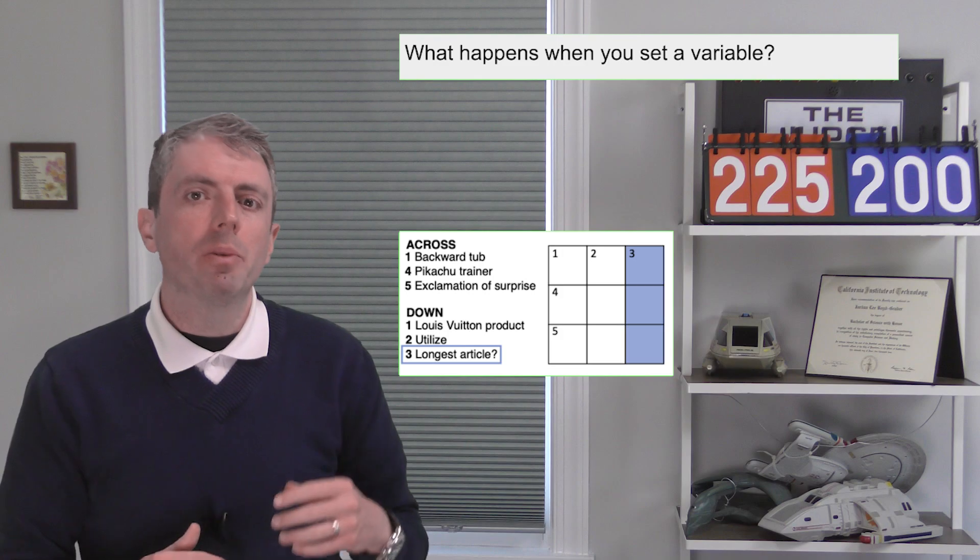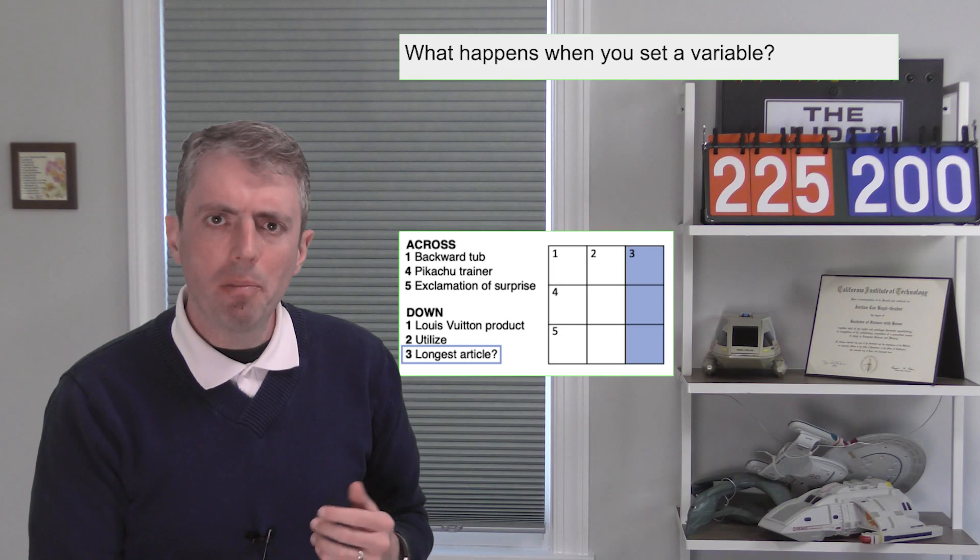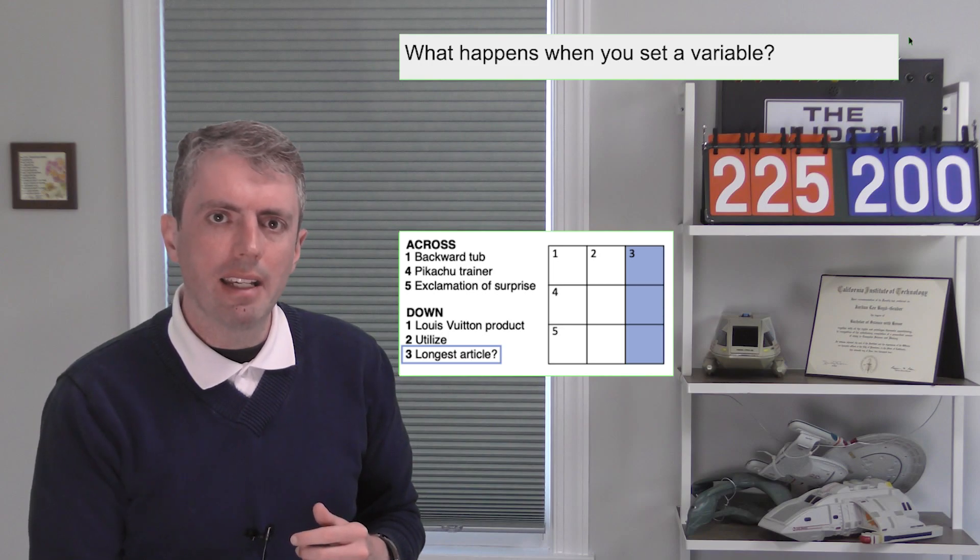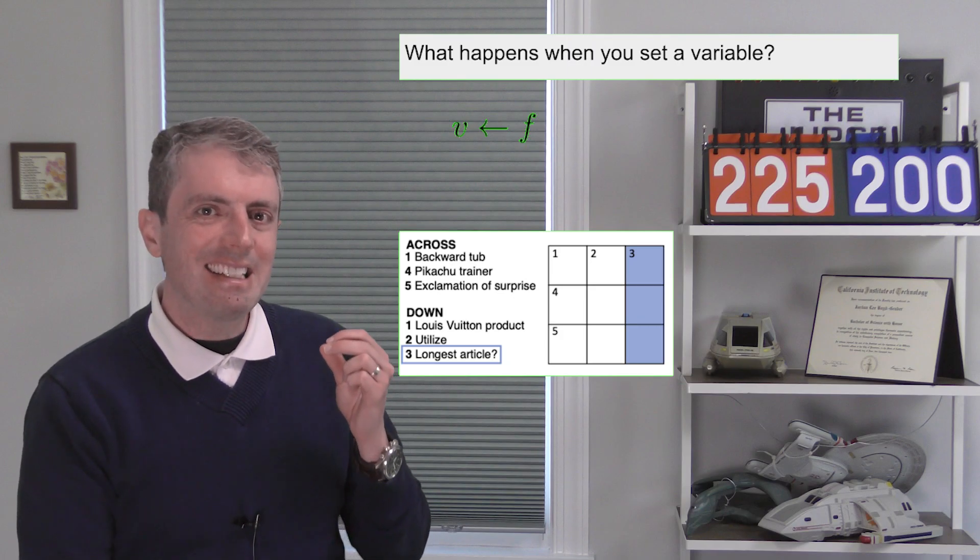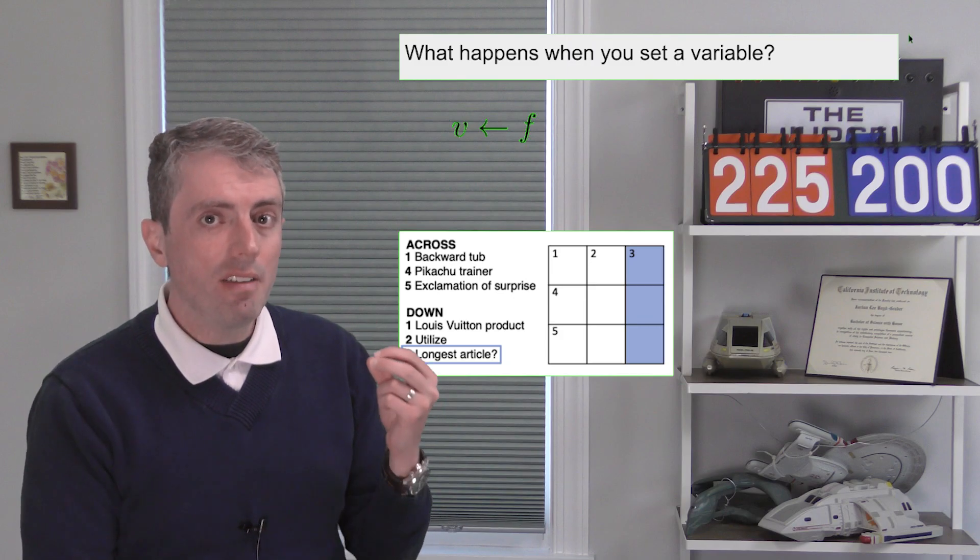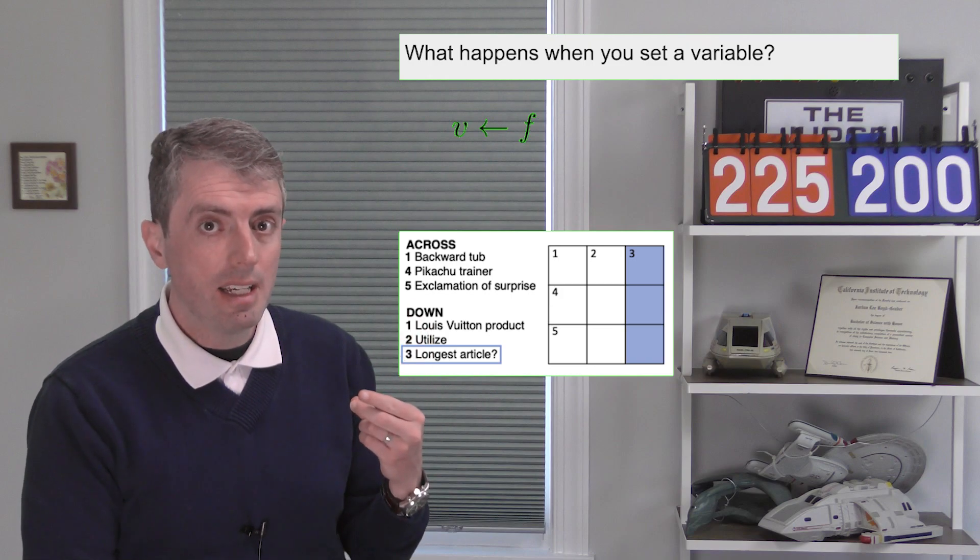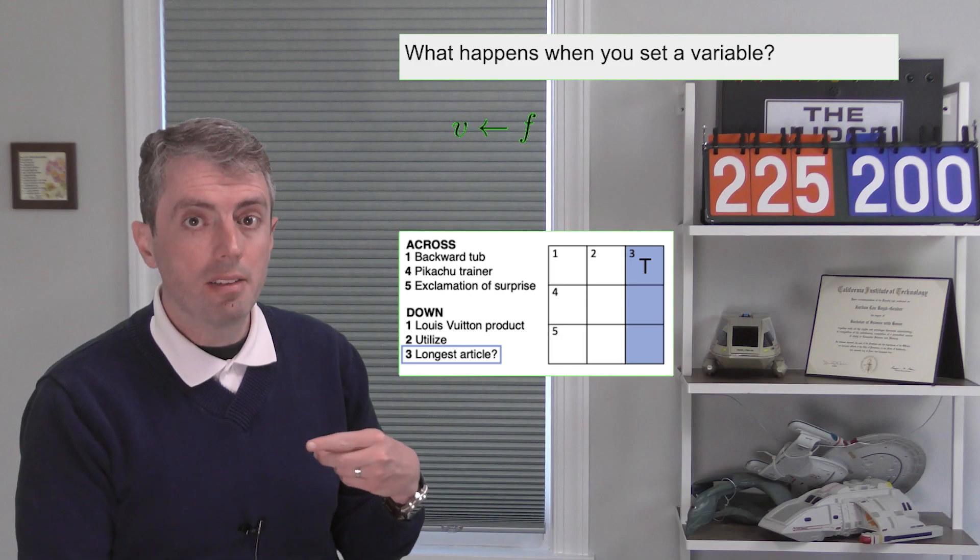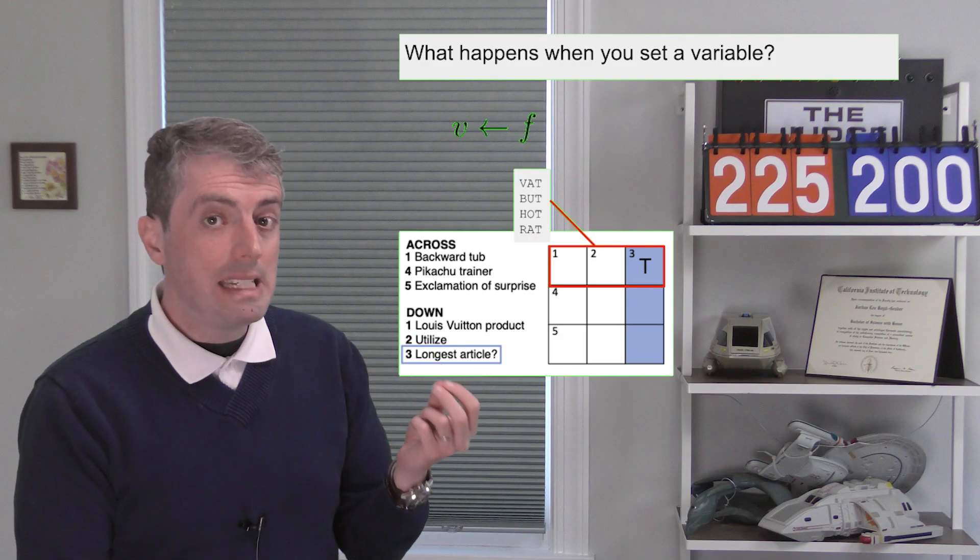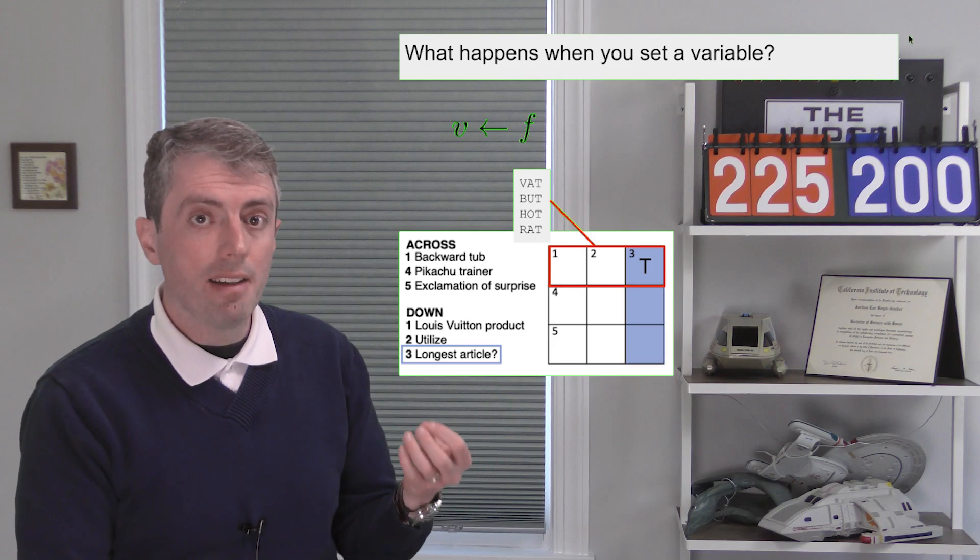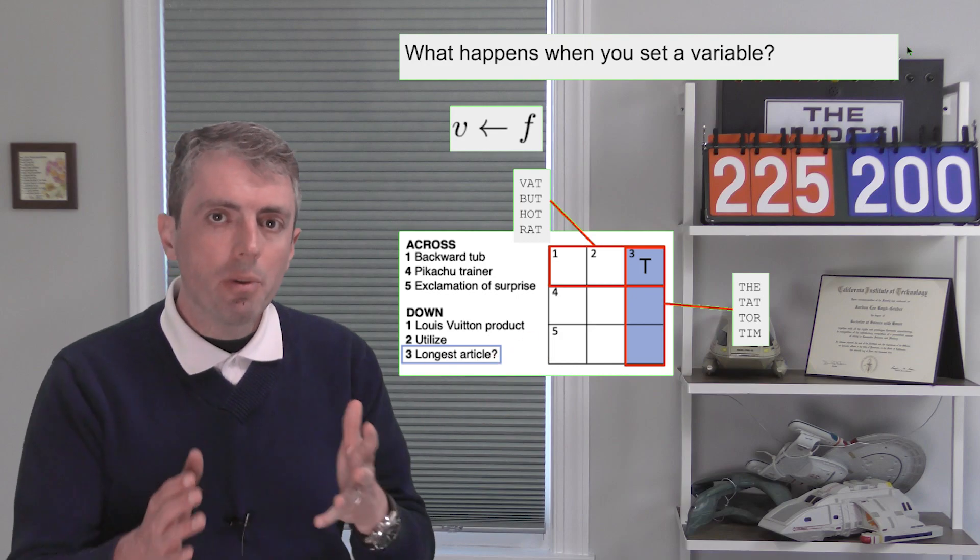So what happens when you write down one letter in a cell on the crossword? To make this a little bit more concrete, let's call this setting V to be F. When you do that, it has downstream effects on all of the nodes in the graph connected to that cell. So if you set this cell to T, then it constrains the answers to 1 across to be things like THAT, BUT, HOT, or RAT. And then 3 down has to be THE, TAT, TOR, or TIM.